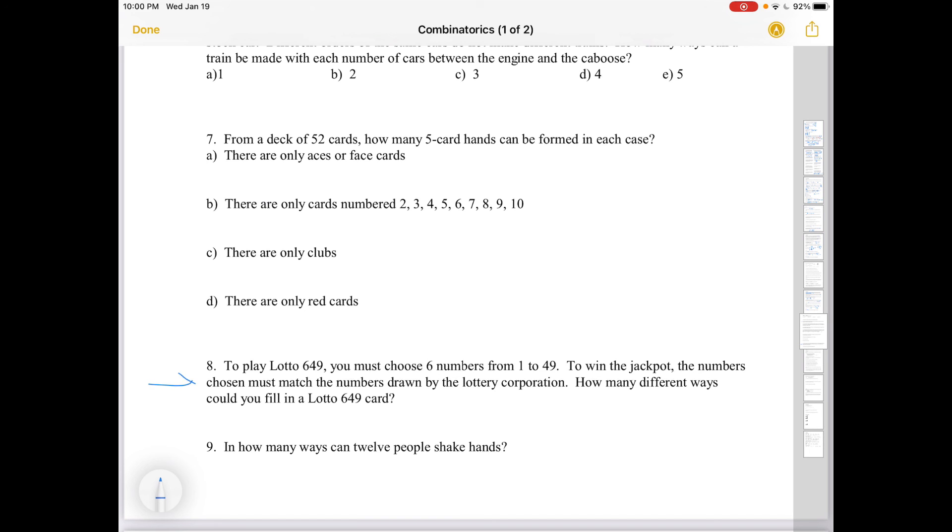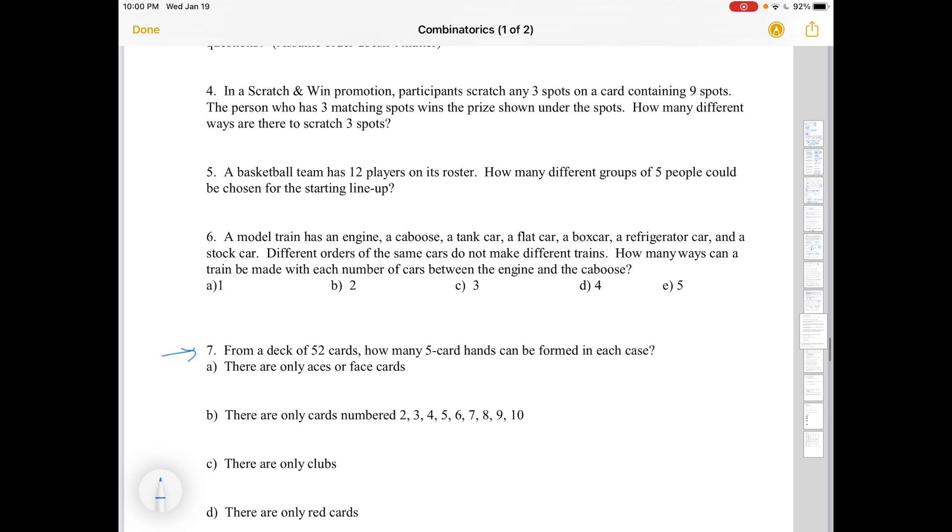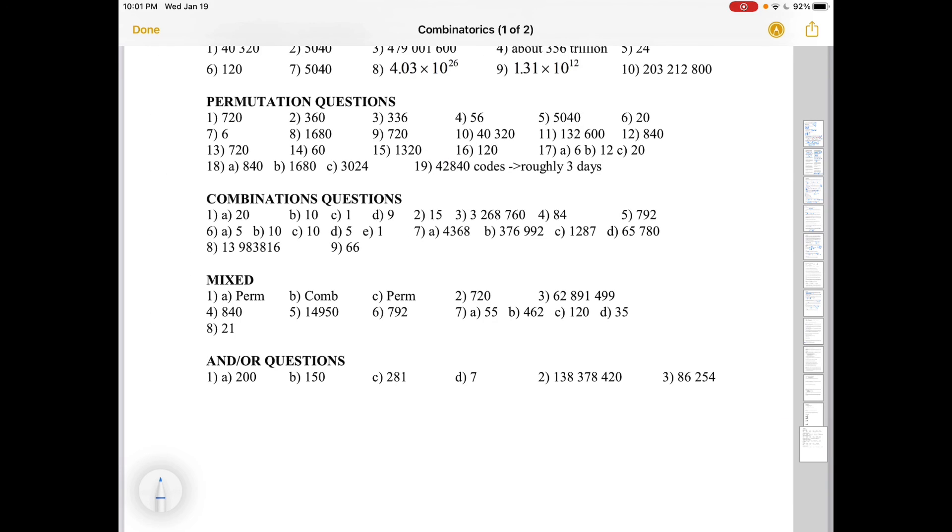Number eight is interesting, it's about gambling. Number nine is an interesting one. Number seven requires you to know a bit about card hands. So if you don't know a lot about cards, you can either check it out or skip over that one. As always, there are answers at the end of this PDF. So I'll scroll slowly through the questions and then I'll go to the answers. And there are the answers for combination questions.